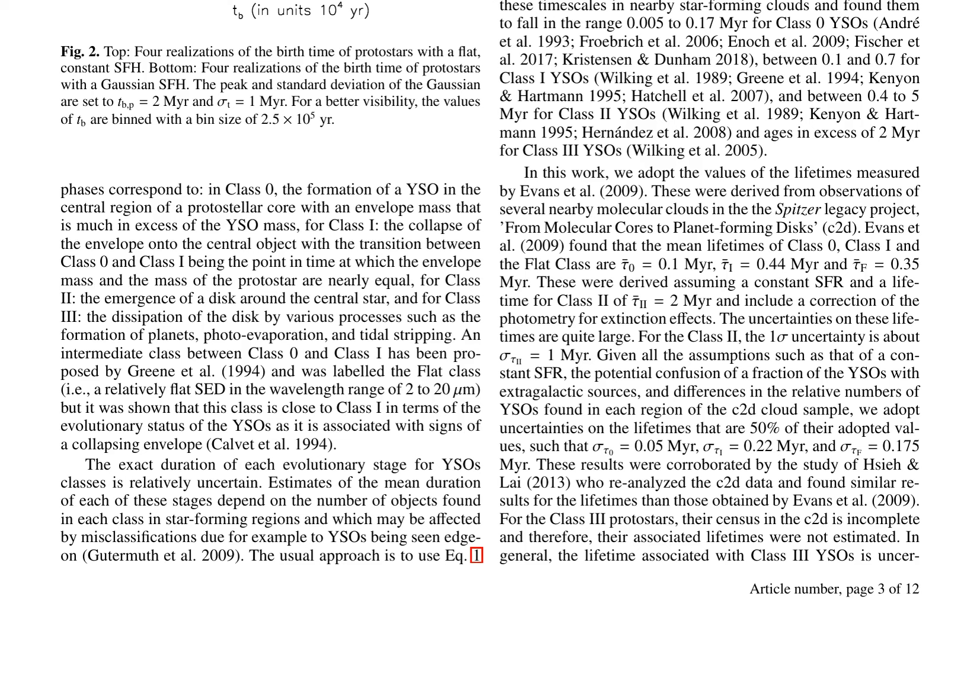In a recent study, researchers investigated the accuracy of SFR estimates derived from direct star counts in young star-forming regions. The investigation employed a Milky Way-like IMF and considered two distinct star formation histories: a constant SFH and a Gaussian-like SFH with a peak at 2 Myr and a standard deviation of 1 Myr. The time evolution of the number of protostars in different protostellar classes for both SFHs is depicted in Figure 4, where each cluster contains 500 stars. Figure 5 illustrates the time evolution of the SFR measured using the populations of YSOs found in different classes and their respective lifetimes, with the dashed line representing the true SFR. The findings suggest that while SFR estimates measured using a single class of protostars converge to the real value, they do so with a delay that increases for more evolved protostars.